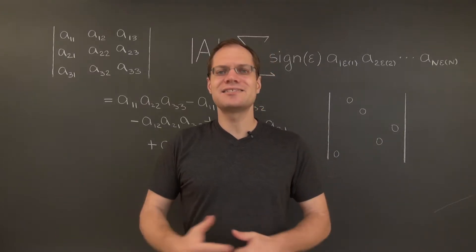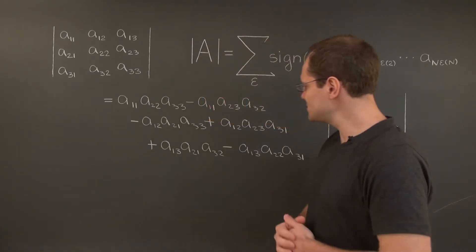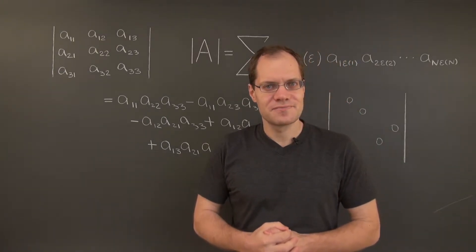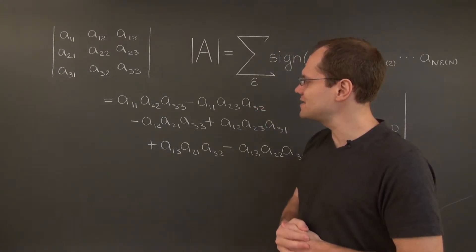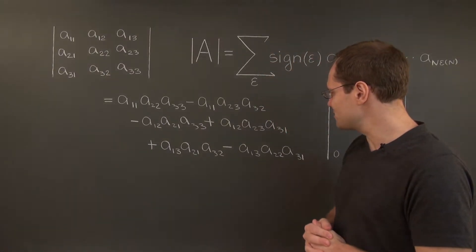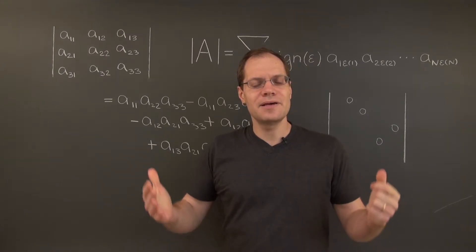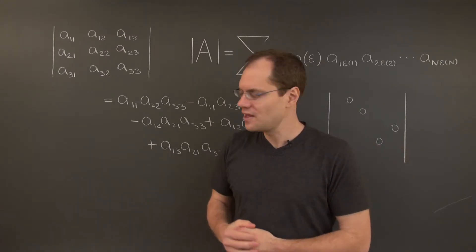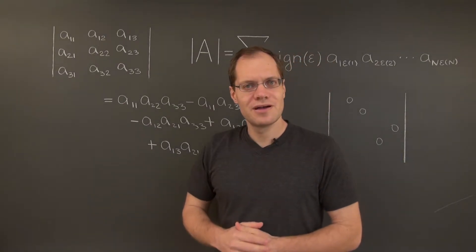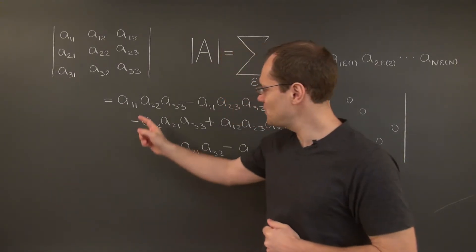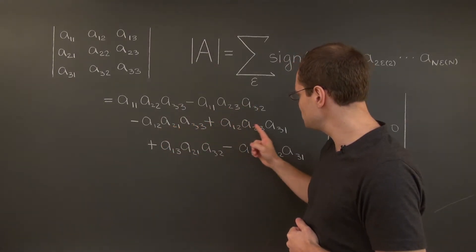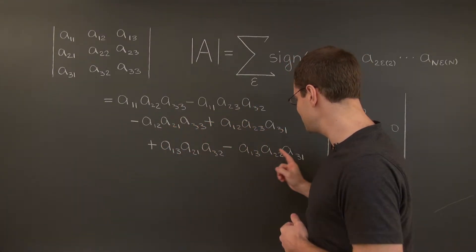Now it's time to take a step back and summarize what we're seeing. We have 6 terms, each a product of 3 entries, one from each row and one from each column. The rows always come in order in each term. If I were to name the first subscript in each term, it would sound like a waltz — it would go 1, 2, 3 repeated across all six terms.